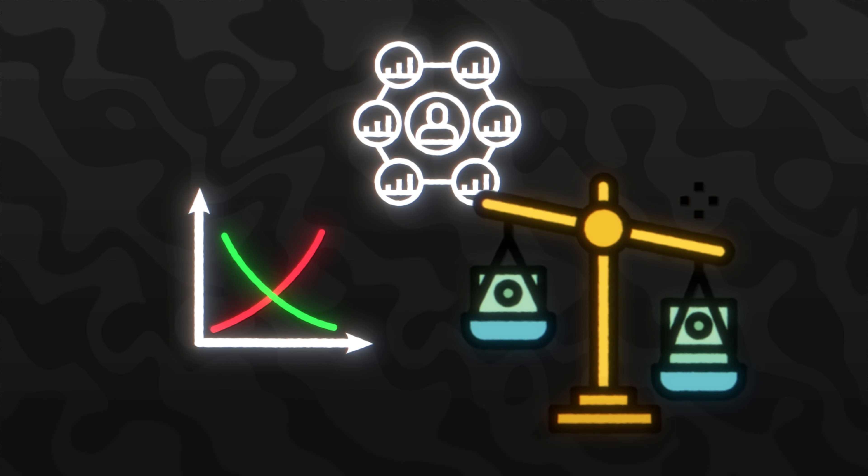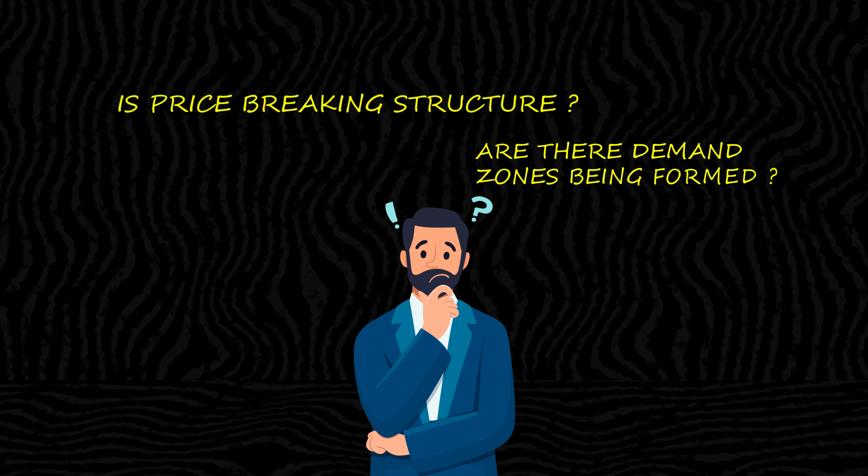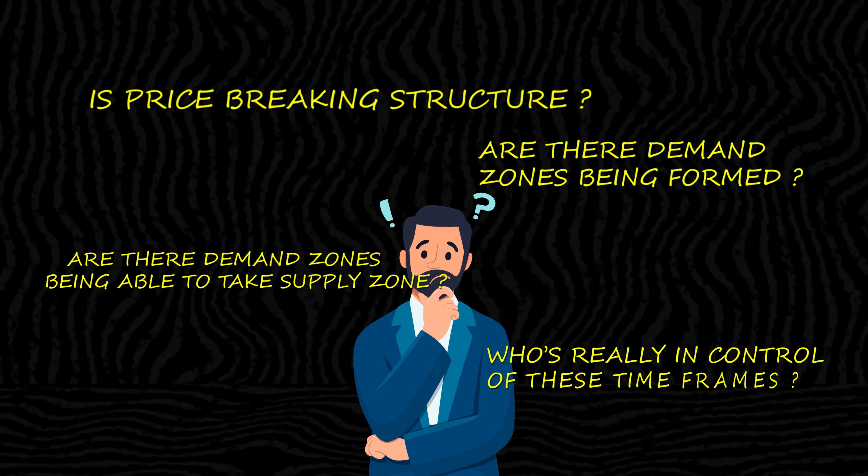It really depends on what strategy you use. For me, I look at supply and demand, balance theory, and market structure. A lot of what I do is look at the one-hour, two-hour, three-hour, and four-hour chart — zooming in and figuring out: is price breaking structure? Are there demand zones being formed? Are these demand zones able to take out a supply zone? Who is really in control? That's what you want to look at, and it's really going to tell you where you want to get in, where to get out, and where to stay away from.